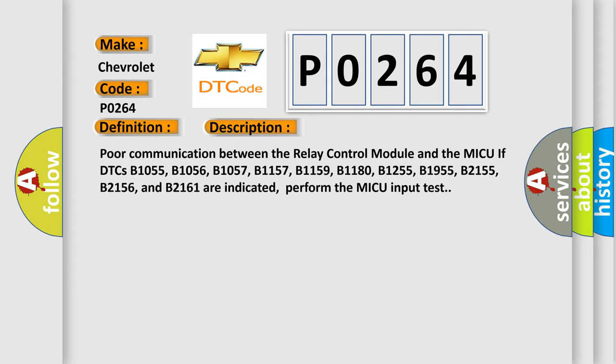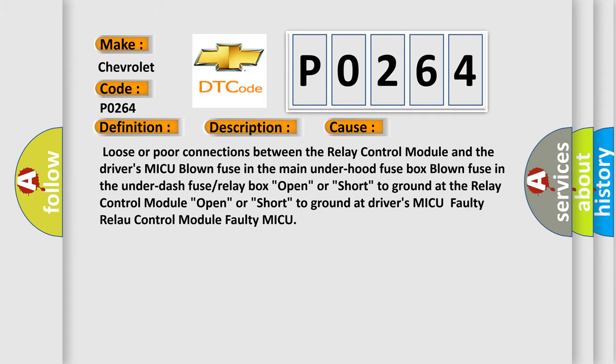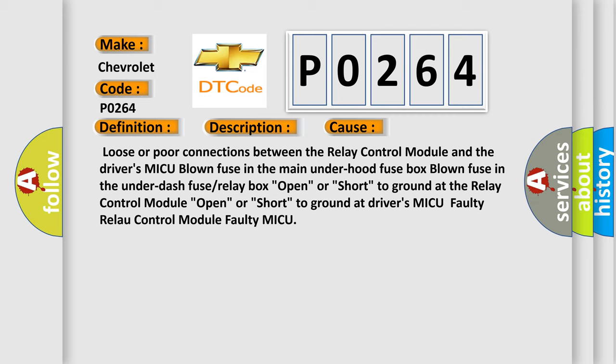Perform the MICUDORSW input test. This diagnostic error occurs most often in these cases: loose or poor connections between the relay control module and the driver's MICUDORSW; blown fuse in the main underhood fuse box; blown fuse in the underdash fuse or relay box; open or short to ground at the relay control module; open or short to ground at driver's MICUDORSW; faulty relay control module; or faulty MICUDORSW.